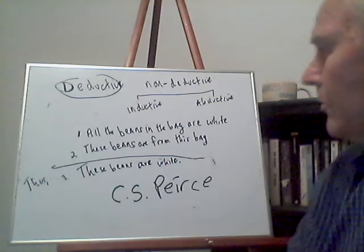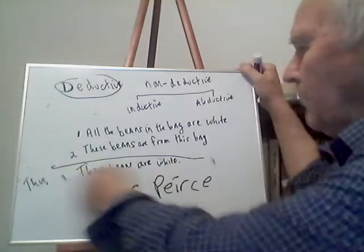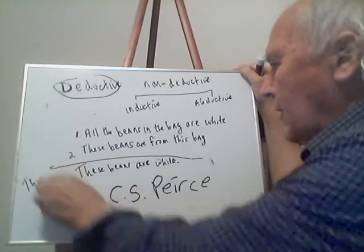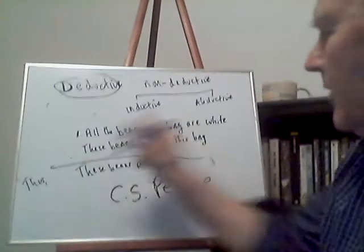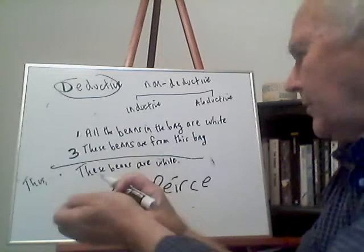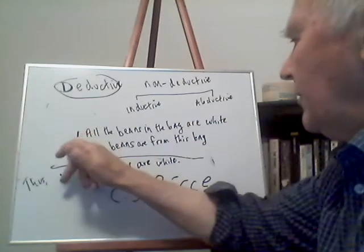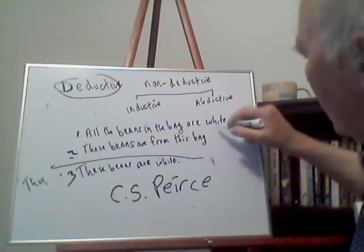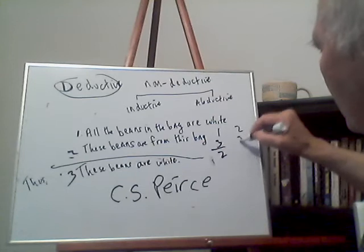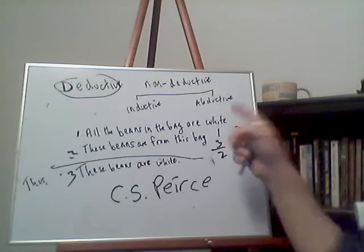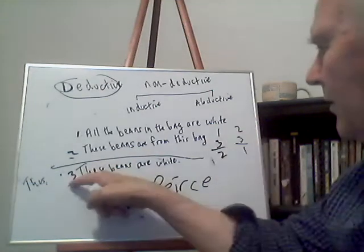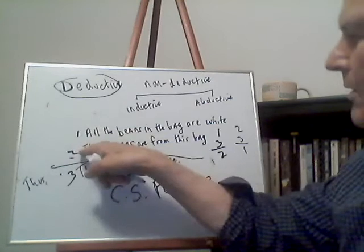Now I'm going to rearrange the same three statements to create different argument types. We'll keep the statements the same but switch which ones are premises and which is the conclusion. We'll do argument forms: one-two-three, one-three-two, and two-three-one.